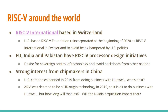RISC-V has also become very interesting at the national level. Organizations like the European Union and nations like India and Pakistan have national initiatives to do RISC-V processor designs, driven by the desire for sovereignty over technology and to avoid potential backdoors from other nations. There's also strong interest from chip makers in China — US companies were banned in 2019 from doing business with Huawei, so other Chinese companies are probably wondering who will be next. ARM is deemed UK-origin technology, so it was okay for Huawei, but the uncertainty around that and the Nvidia acquisition of ARM is driving more companies to look at RISC-V to reduce uncertainty in their technology roadmaps.